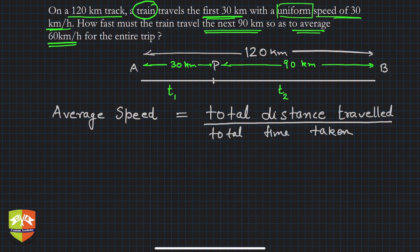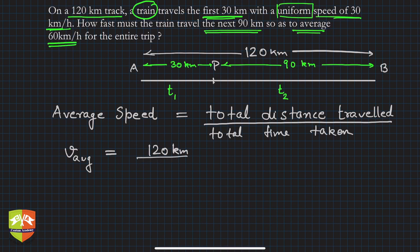Let's write the physics first, and then the problem reduces to mathematics. So v_average equals total distance, which is 120 kilometers, divided by t1 plus t2, the total time in hours. If I find t1 and t2, my job is done. It is given that the first 30 kilometers are traveled with a uniform speed v1 of 30 km/h.